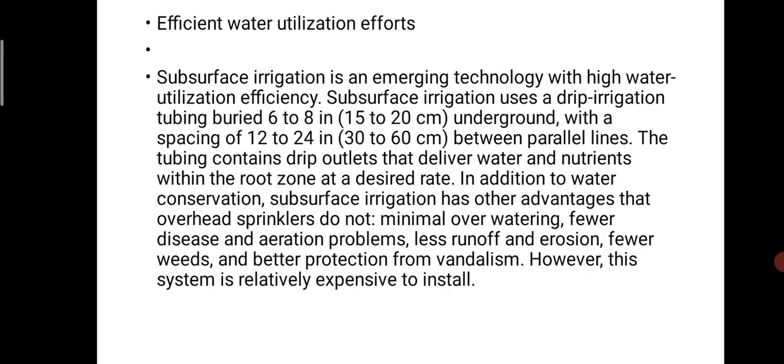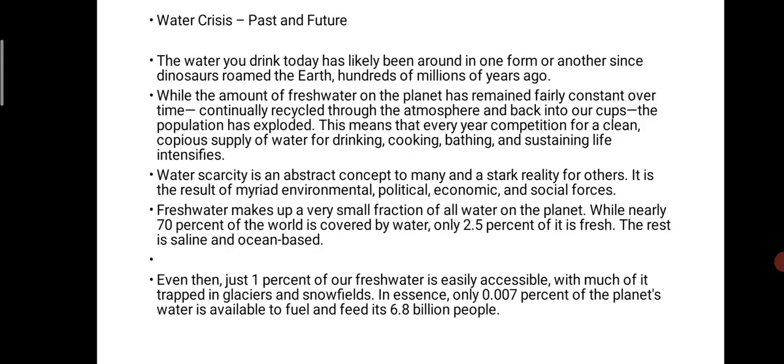Efficient water utilization: subsurface irrigation is an emerging technology with high water utilization efficiency. It uses drip irrigation tubing buried six to eight inches underground with spacing of 12 to 24 inches between parallel lines. The tubing delivers water and nutrients within the root zone. In addition to water conservation, subsurface irrigation has advantages over overhead sprinklers — minimal overwatering, fewer diseases and aeration problems, less runoff erosion, fewer weeds, and better protection. However, this system is relatively expensive to install.